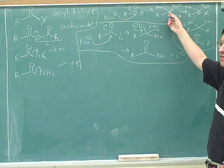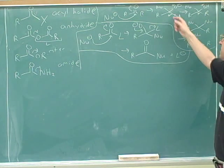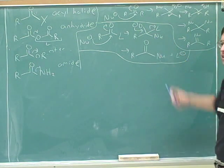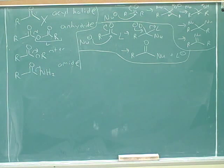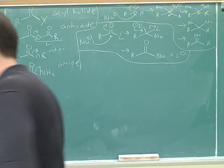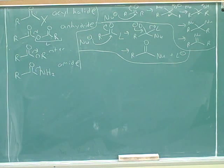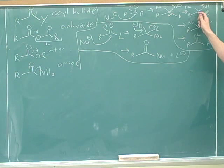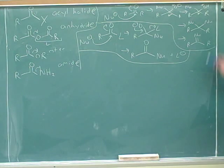Why can't an aldehyde or ketone do this and reform the carbonyl the same way? Because it doesn't have any decent leaving groups — R and H are not leaving groups. That's the key difference. Before, with aldehydes and ketones, we would protonate to form a hemiacetal, or have another nucleophile attack to form a full acetal, because the molecule couldn't just kick off a group to reform the double bond.